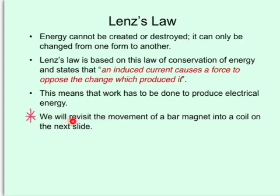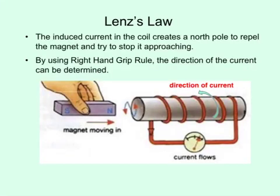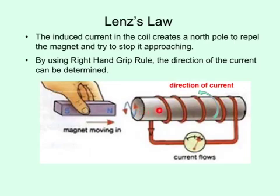We will revisit the movement of a bar magnet into a coil. Now let's see how Lenz's law applies to this situation. This magnet, with a leading north pole, is being moved into the coil, and the coil will produce a north pole here to repel this north pole. To produce a north pole here, the current in the coil must flow that way. To help you determine that, you can use the right-hand grip rule.